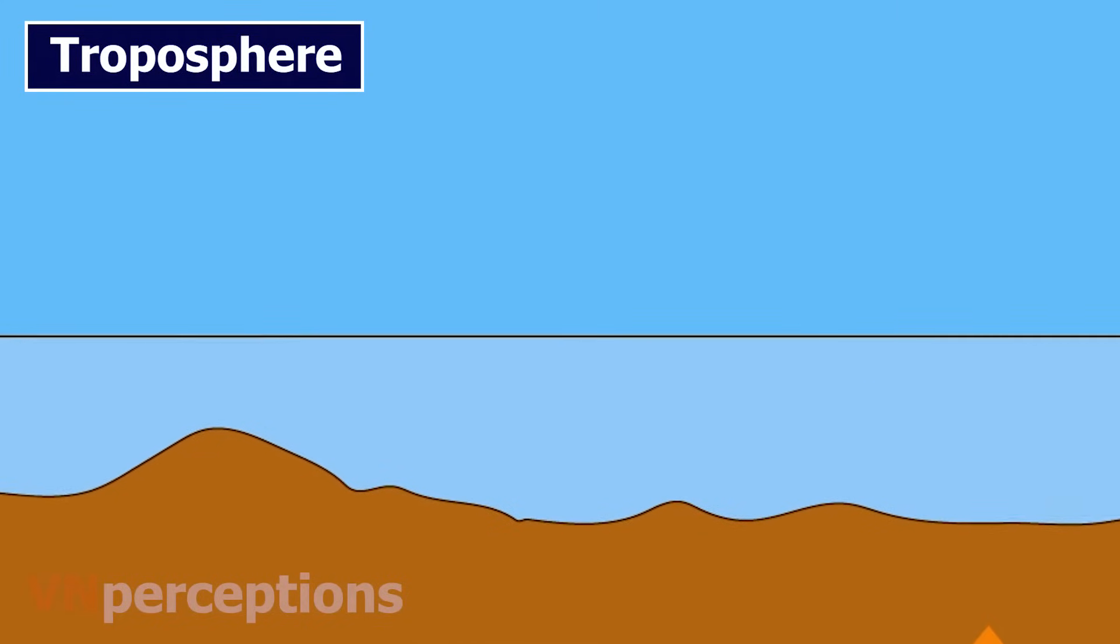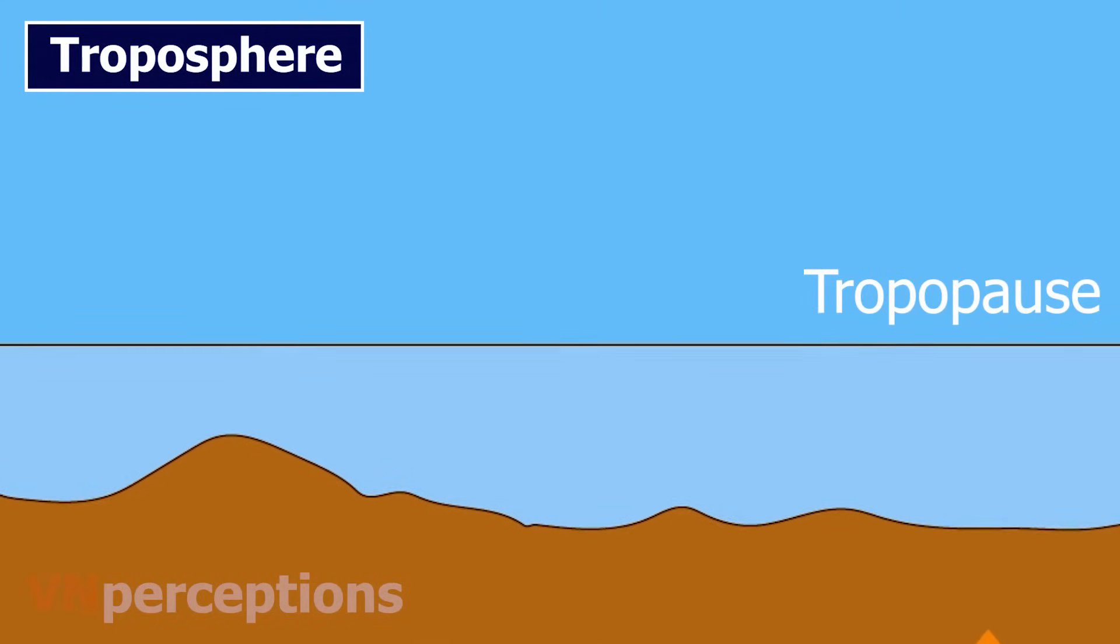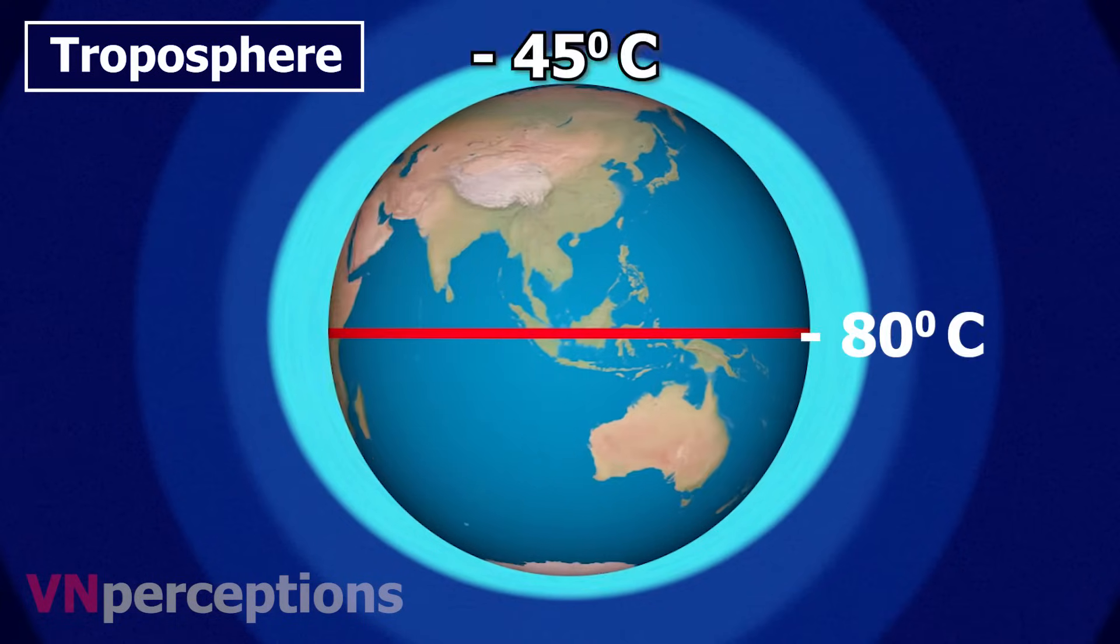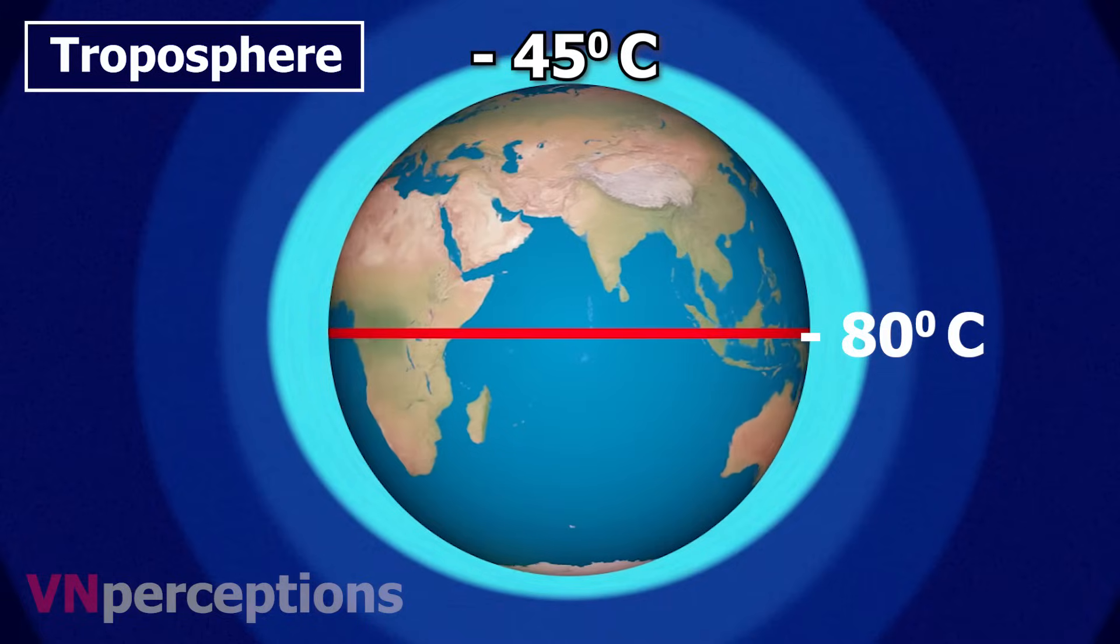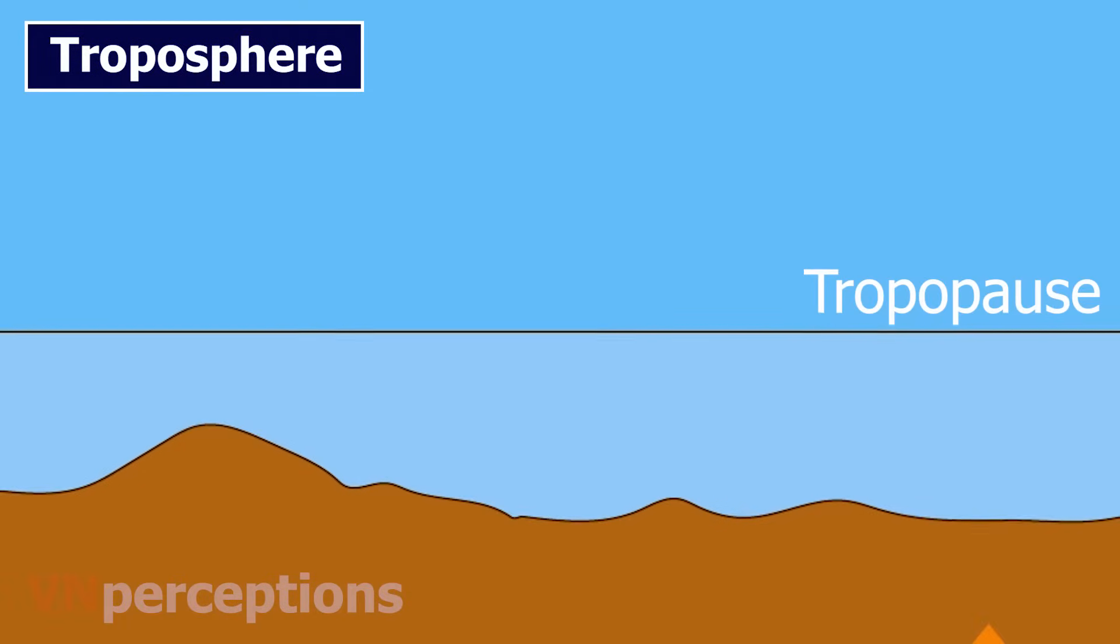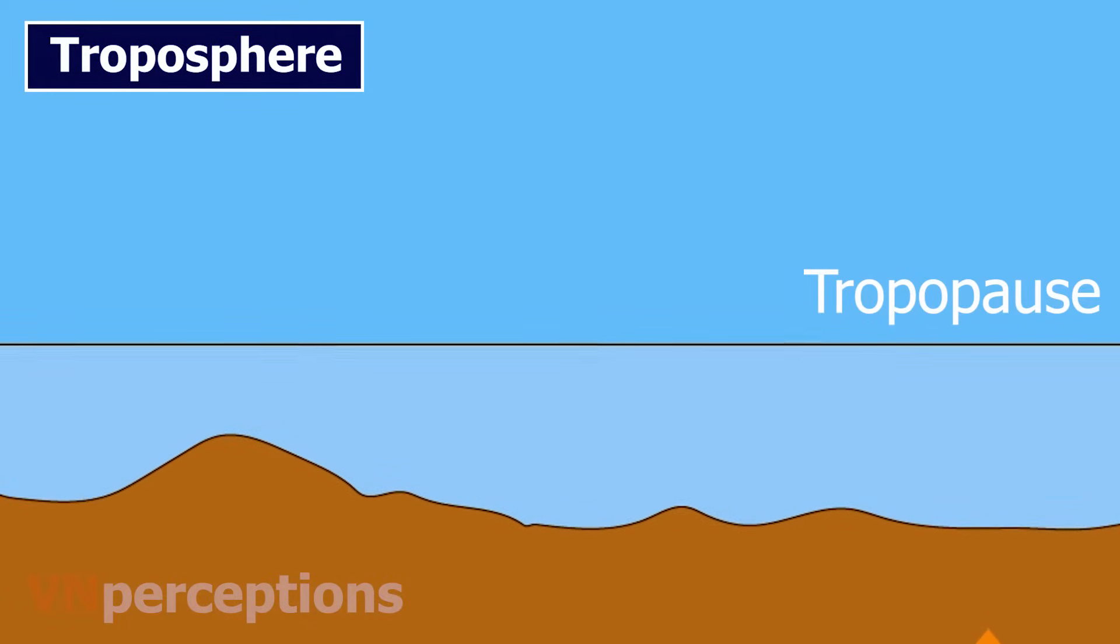The zone separating the troposphere from stratosphere is known as tropopause. The air temperature at the tropopause is about minus 80 degrees Celsius over the equator and about minus 45 degrees Celsius over the poles. The temperature here is nearly constant and hence it is called tropopause.